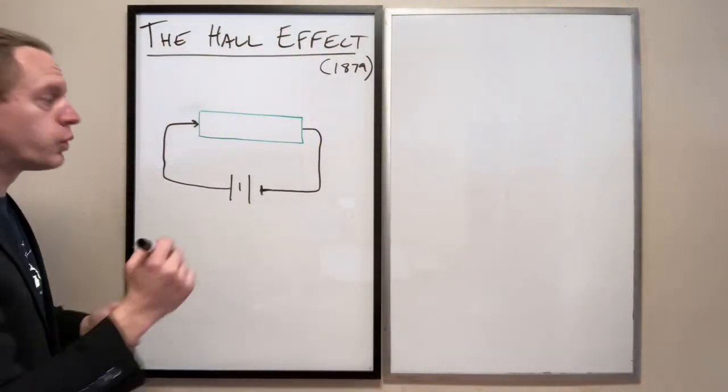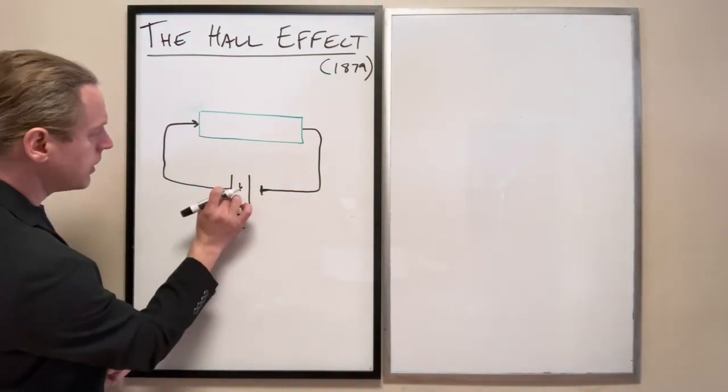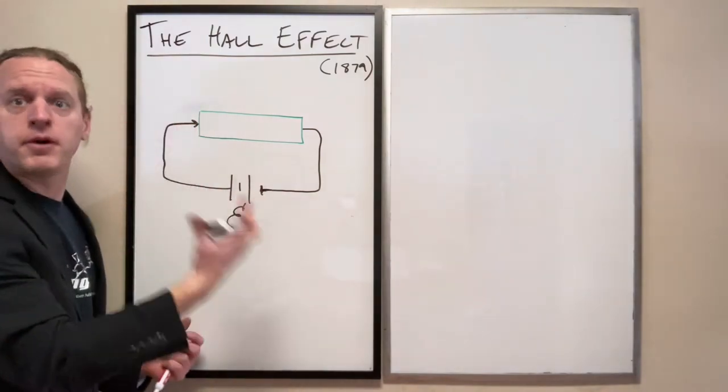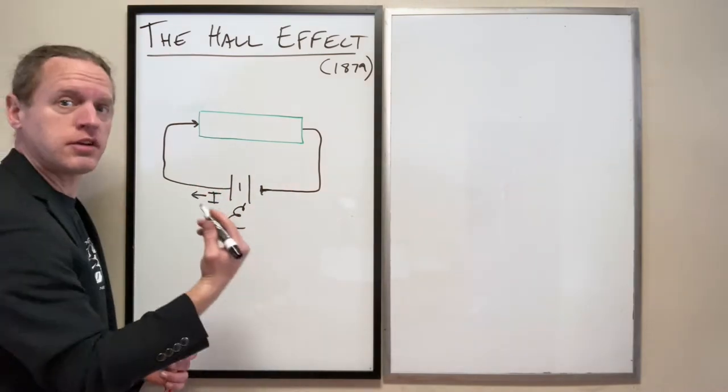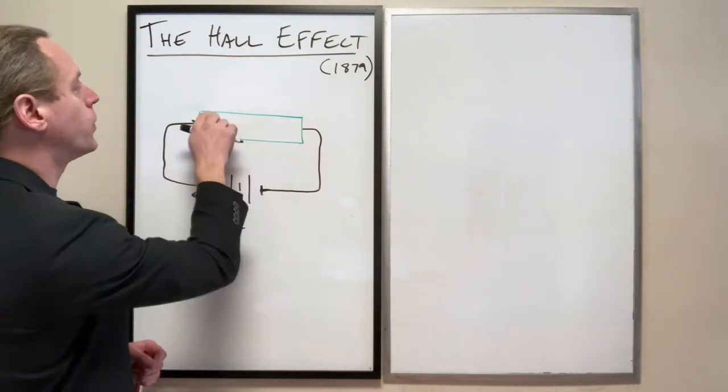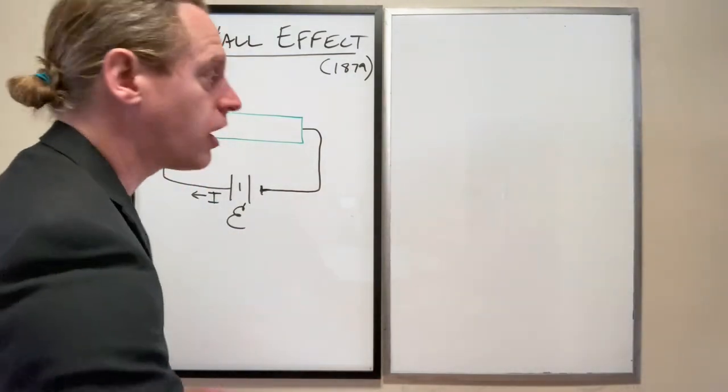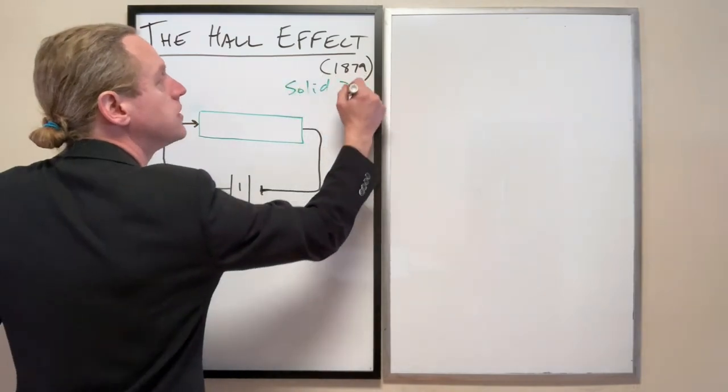So the first thing we're going to do is provide a voltage source here. We're going to link a conductor here, a typical wire, and we're going to push current, what we call conventional current, out that way. And we now come to a solid 2D conducting plate.